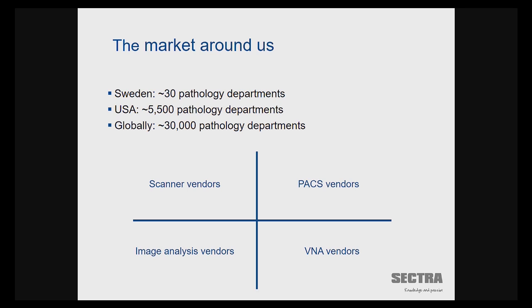Looking at the market, we have about 30 pathology departments today. I would say about half of them are digital, at least to some extent, and almost all of them have a scanner at least. The US is definitely the biggest market — I read somewhere that they have half of the world's population of pathologists. Globally there are about 30,000 pathology departments. From a vendor perspective, we have scanner vendors, PACS vendors, VNA vendors, and image analysis vendors. For us, it's very important to be a collaborator with different scanner vendors, VNA vendors, and image analysis vendors — we want to be the neutral platform in the middle.